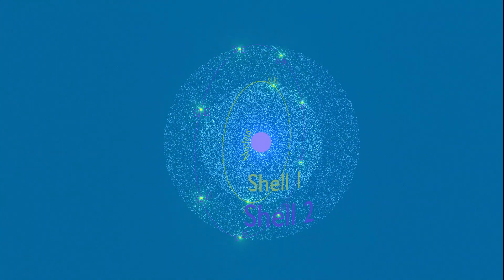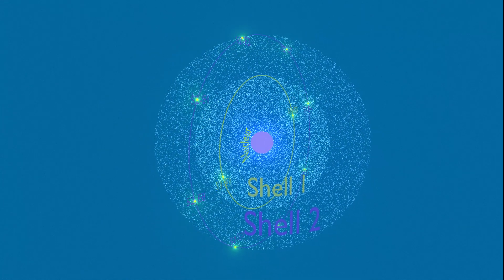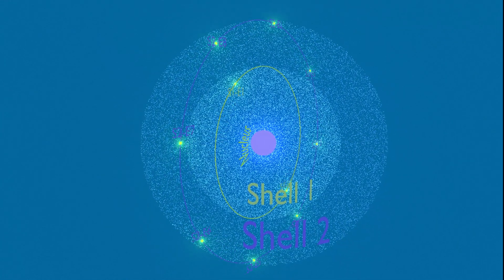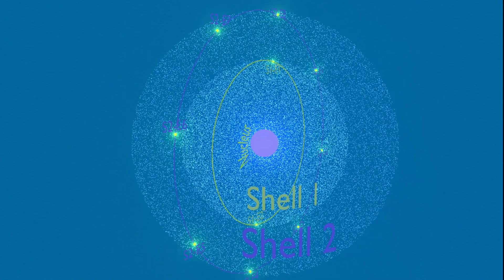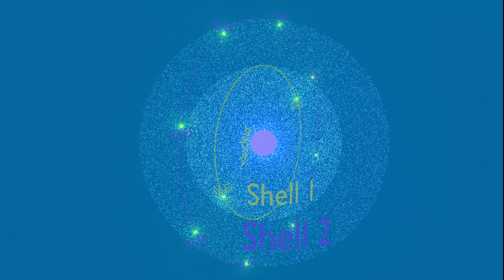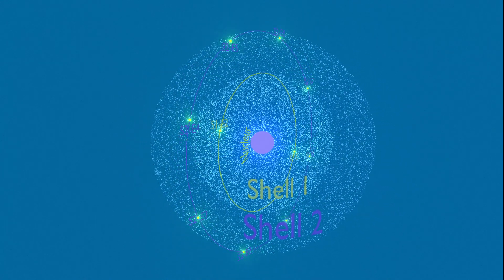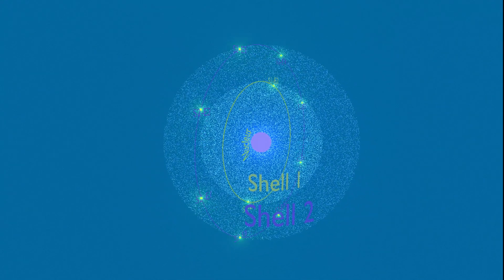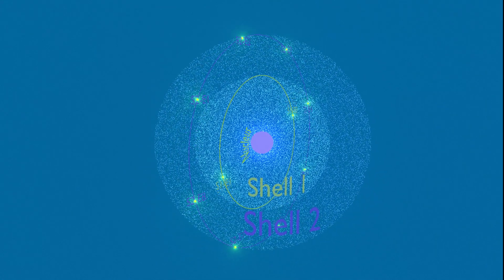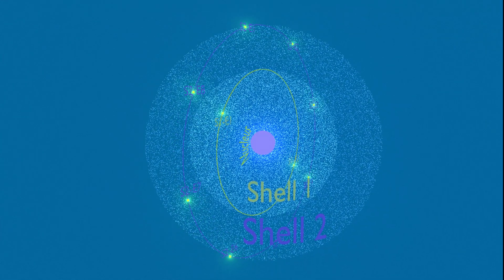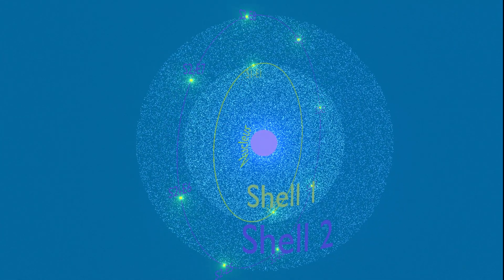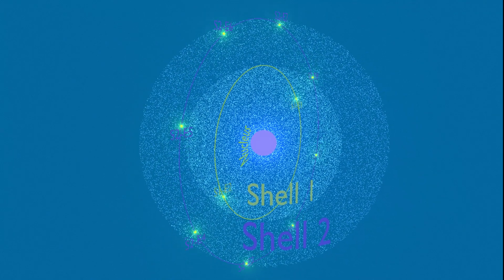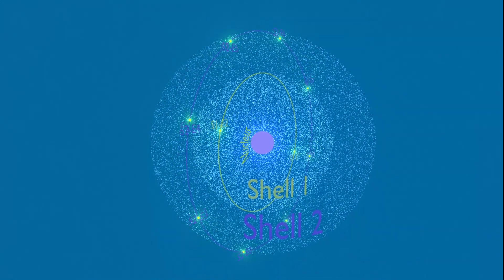This atom has a total of 10 electrons revolving around the nucleus. It is different from the previous atom in the sense that this has two shells compared to the previous one. It is because a shell can contain only a certain number of electrons. The first shell can have only two electrons whereas the next shell can have eight electrons maximum in it. So based on the number of electrons in an atom, it will have either a single shell or multiple shells.